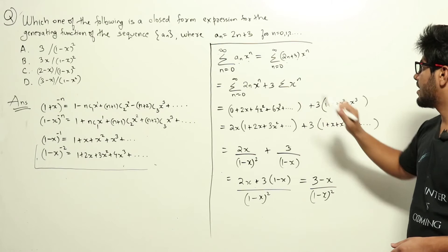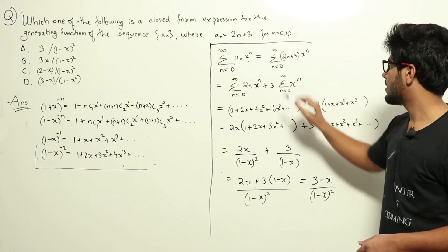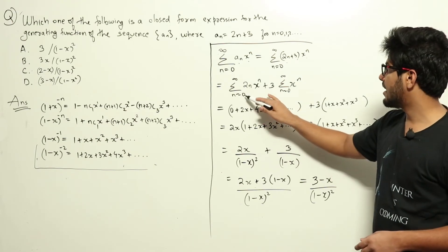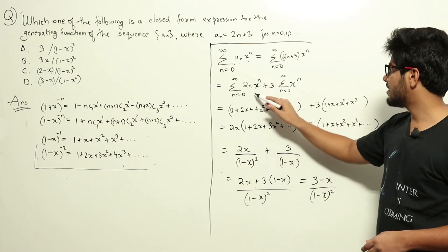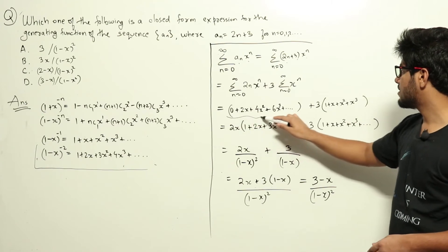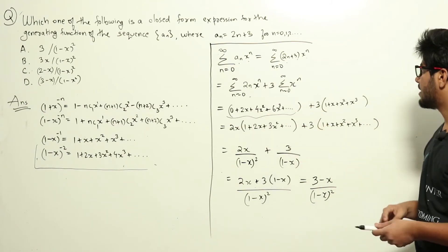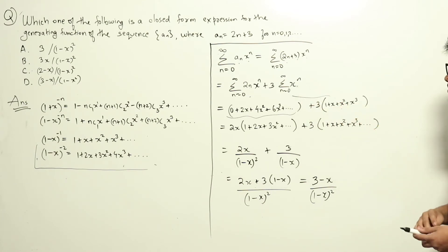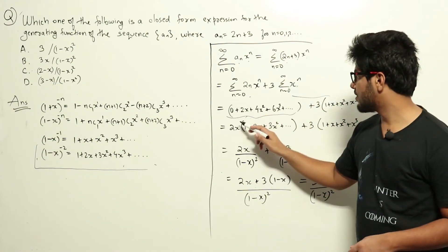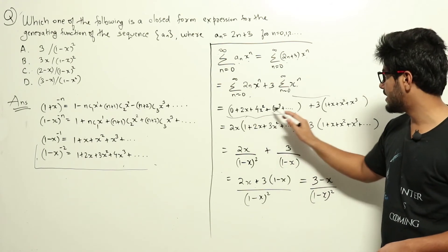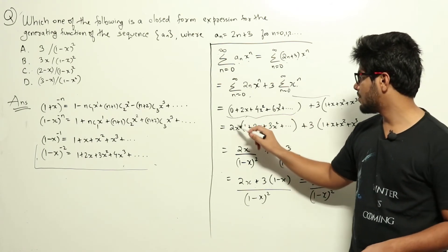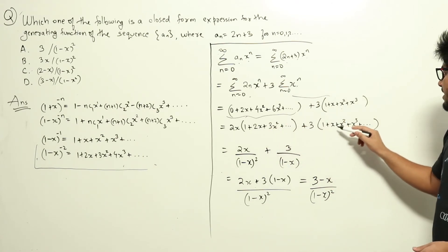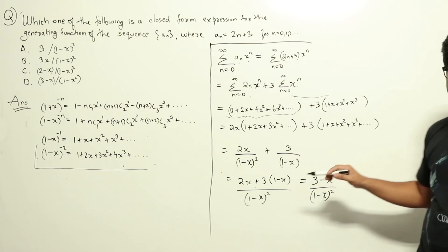Writing out n = 0, 1, 2, etc., we get the sequence for each sigma part. For the 2n·x^n part, 2x is common in all terms, so we factor it out: 2x·(1 + 2x + 3x² + ...). The other part becomes 3·(1 + x + x² + x³ + ...).